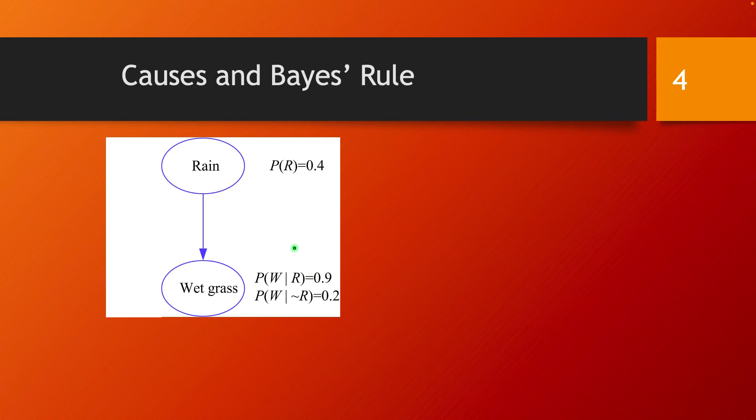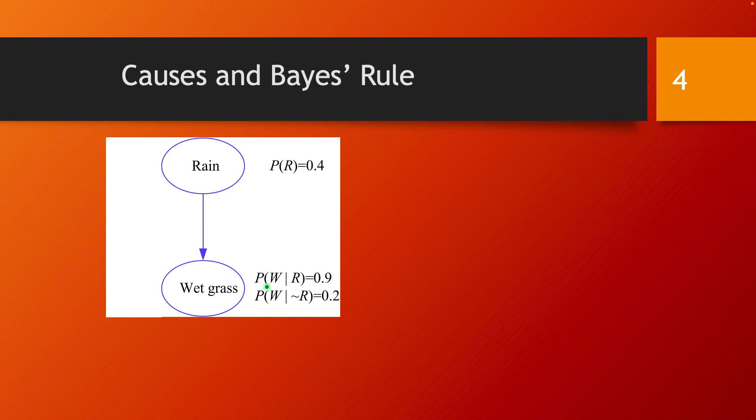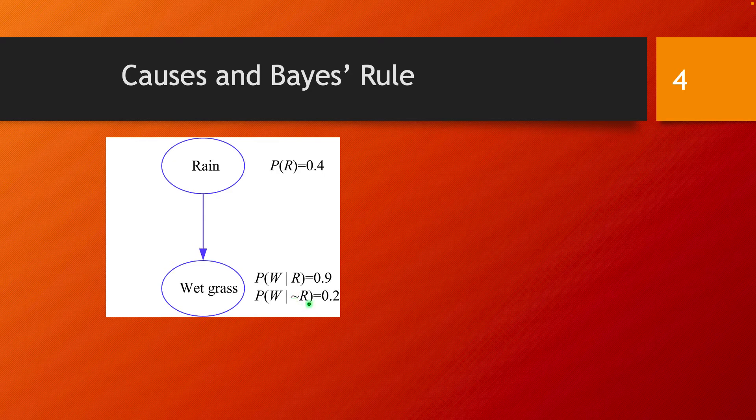One thing that is really good to observe from the very beginning is that even though we only include the rain as a cause for the grass getting wet, in this model we don't exclude the chance that the grass might get wet also for other reasons. For example, because the sprinklers got turned on. And indeed we have also this other conditional probability. There is a chance that the grass is going to get wet even though it didn't rain, and that we set in this particular example to 0.2.